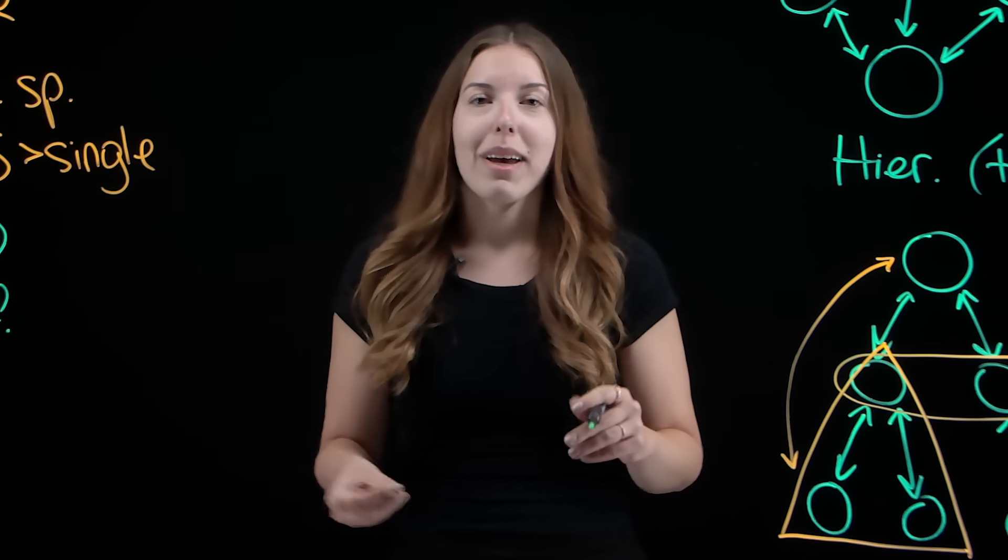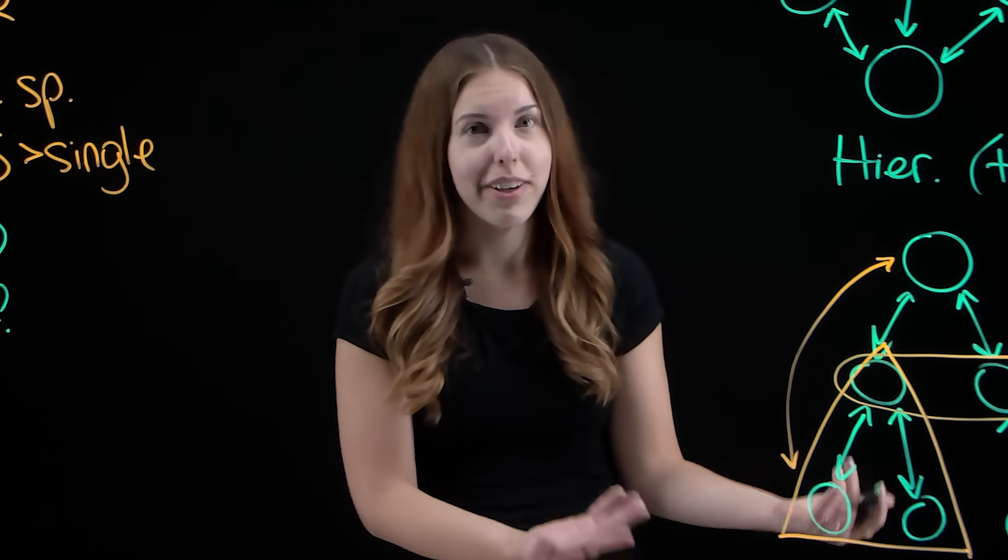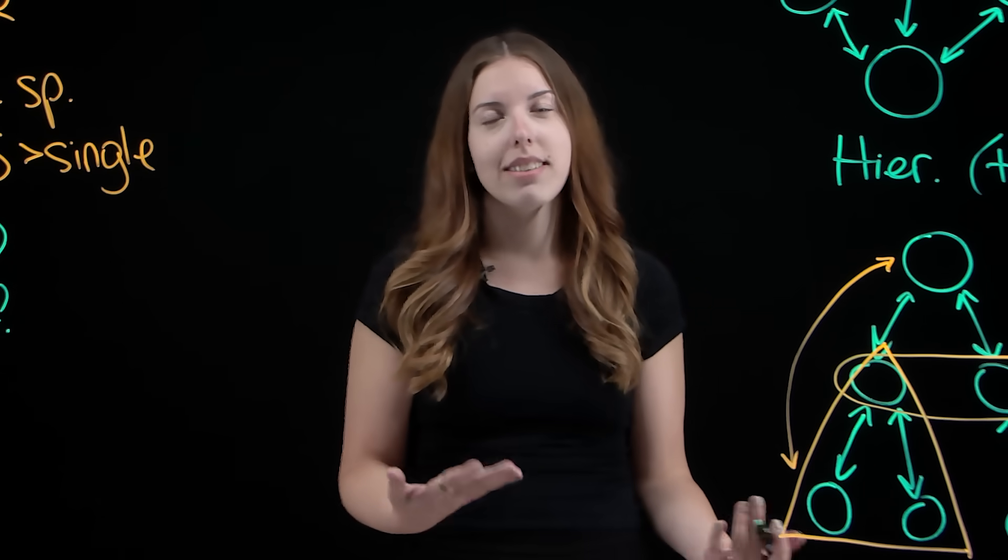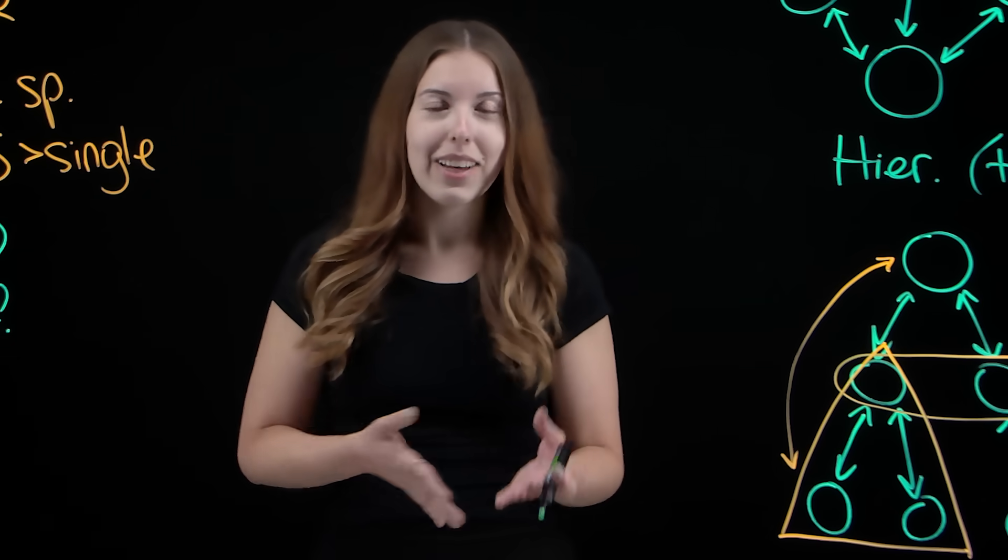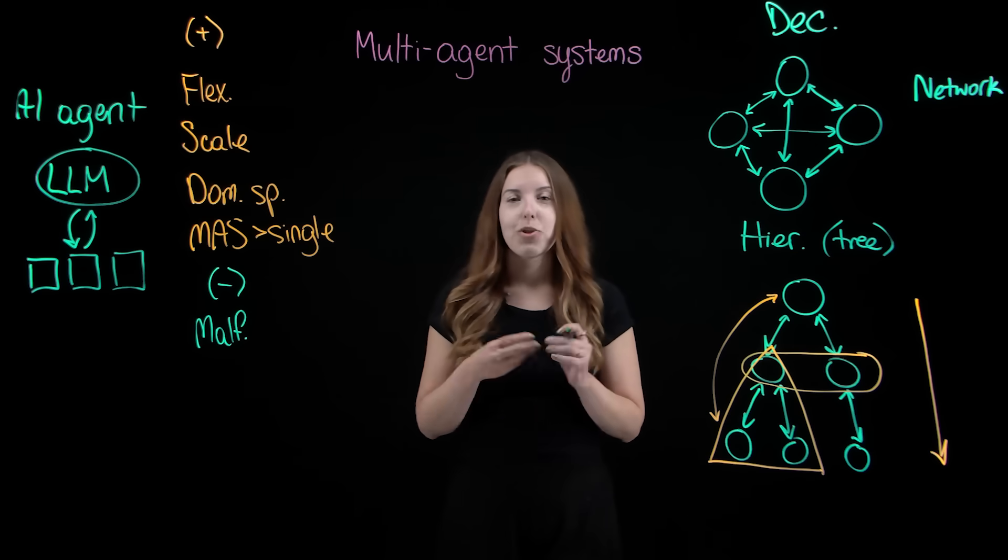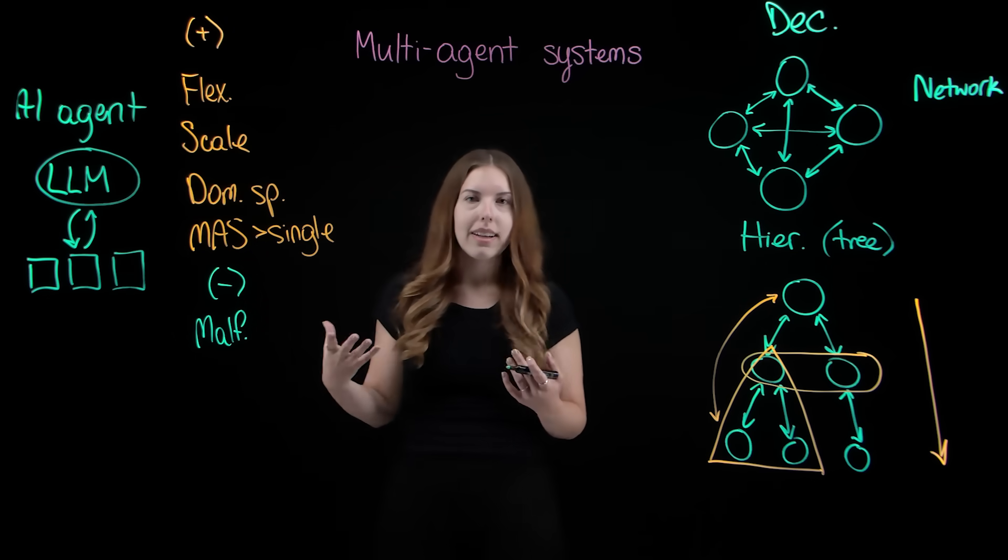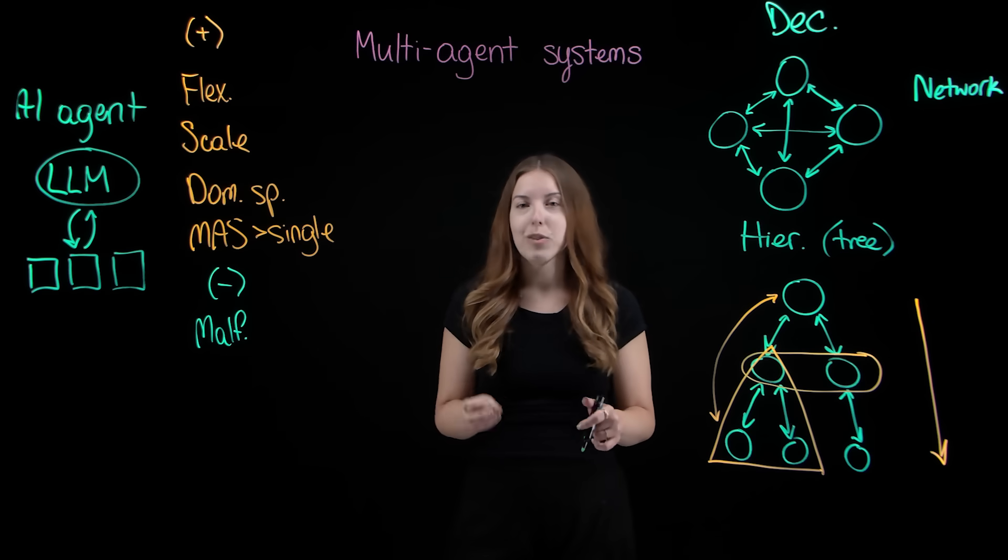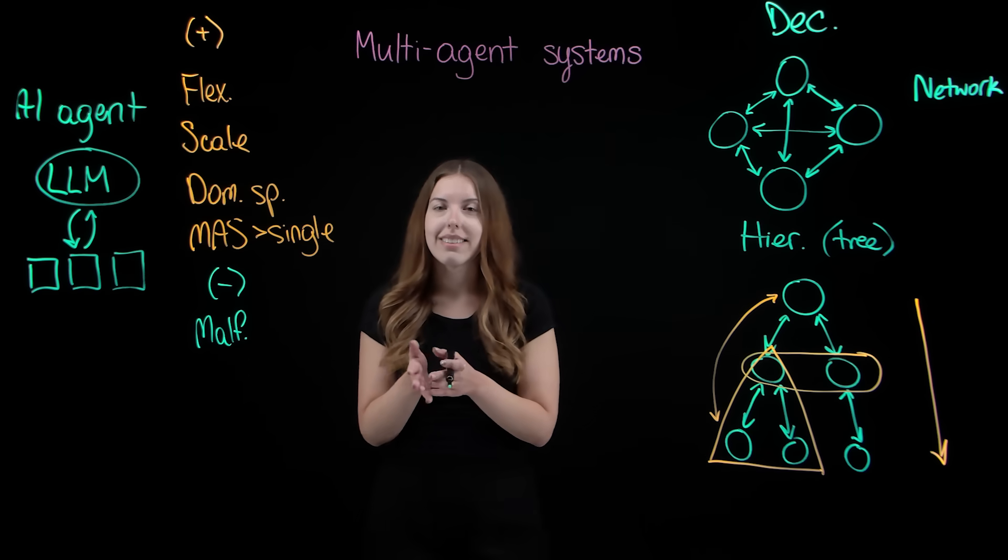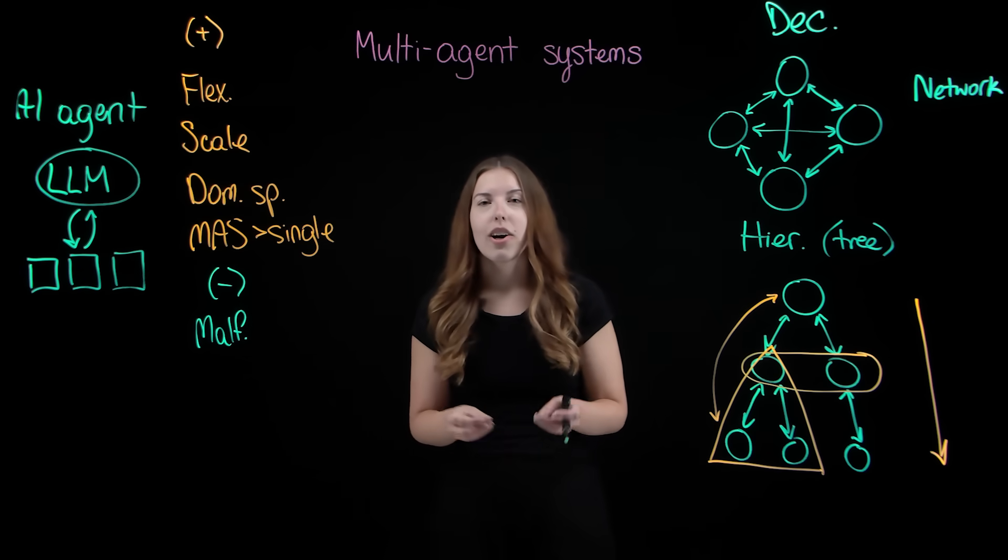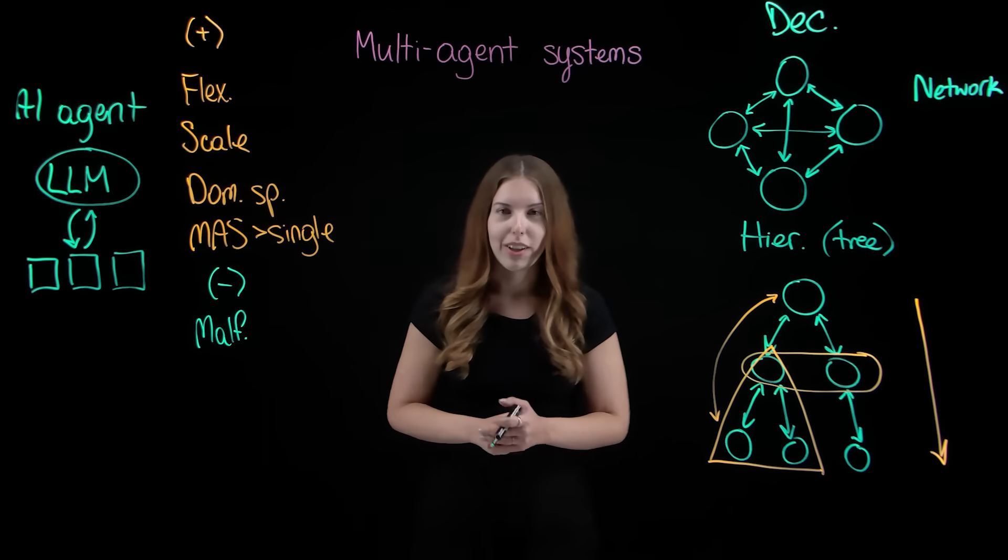Such weaknesses might cause a system-wide failure of all involved agents or expose vulnerability to adverse attacks. Our choice of the LLM, among other factors, impacts how effectively an agent performs. And this is why thorough training, testing, and data governance are critical to minimizing failures.